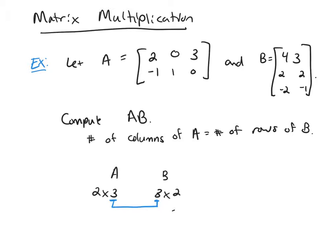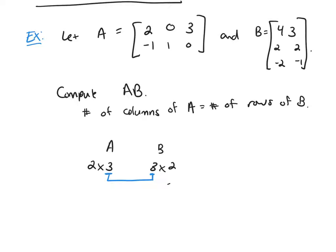and so we can multiply. And then these two outside numbers here, this 2 and this 2, tell us the dimension of the result when I multiply. So here A times B is going to be a 2 by 2 matrix.